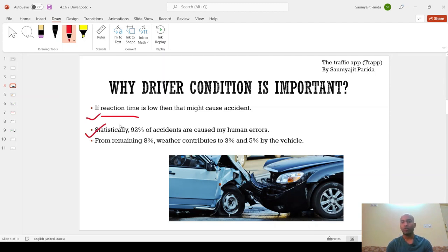Statistically, 92% of the accidents are caused by human errors. And from the remaining 8%, weather contributes to 3% and 5% by the vehicles. Maybe there is some problem with the vehicles, maybe the vehicle is not, the maintenance is not good enough, the brakes are not good, which might lead to some faults in the vehicle and then lead to an accident. You might expect a question from the knowledge part regarding this, that what is the approximate percentage of accident caused by human errors?